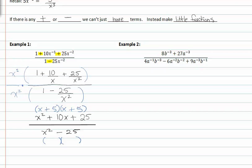The numerator factors to x plus five times x plus five, and in the denominator it factors to x plus five times x minus five. An x plus five is common to both the numerator and denominator, so they divide out, and I'm left with x plus five divided by x minus five.